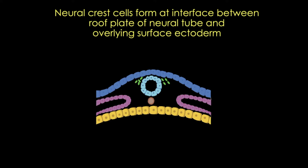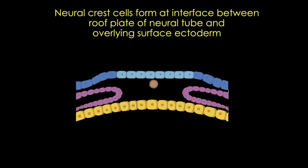The formation of neural crest cells is a multi-step process, requiring contact-mediated tissue interactions between the neural ectoderm, seen here in pale blue, the non-neural ectoderm, seen in darker blue, and the underlying mesoderm. This is controlled by an intricate series of molecular signals, including bone morphogenetic proteins (BMPs), Wnts, fibroblast growth factors, and retinoic acid.